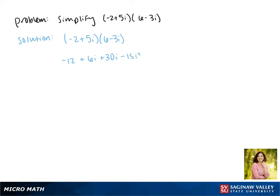Now we can combine the middle terms. We get negative 12 plus 36i. Now we can simplify this last term.